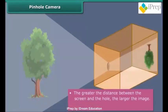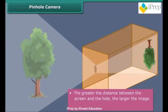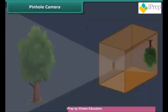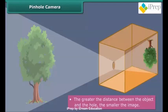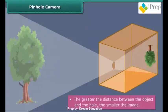The greater the distance between the screen and the hole, the larger the image — but the larger the image, the fainter it is. The larger the distance between the object and the hole, the smaller the image.